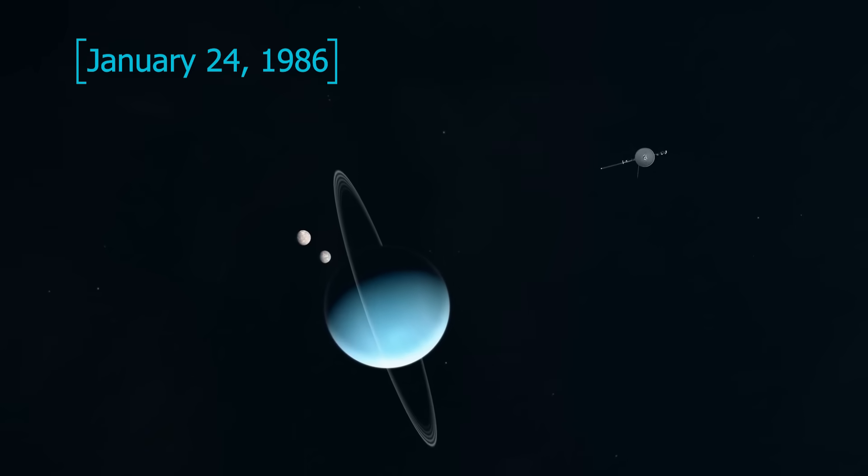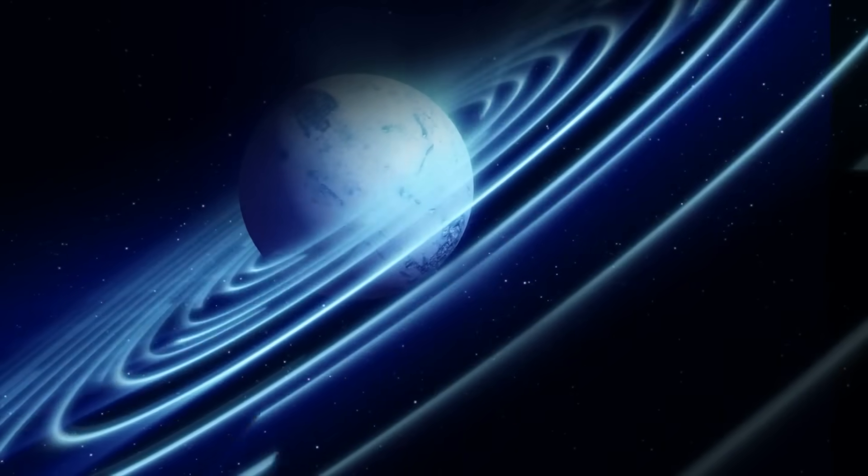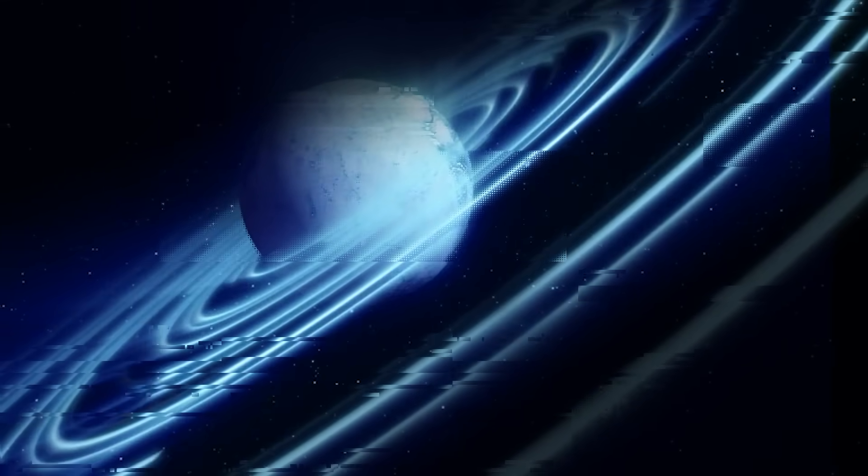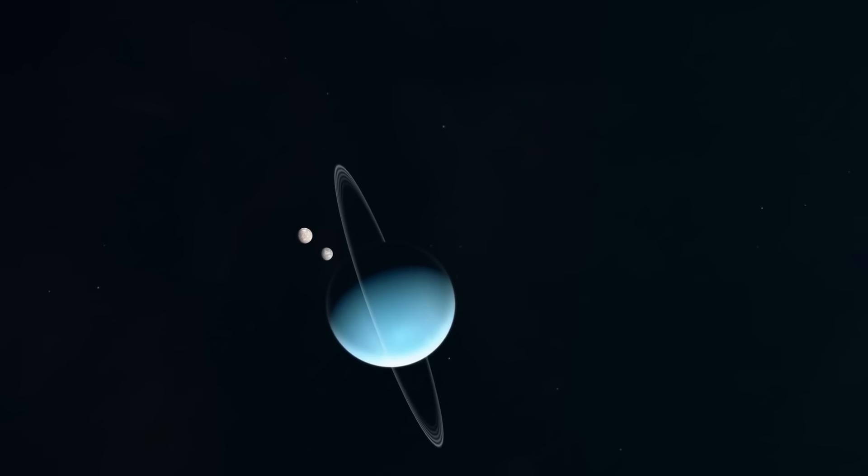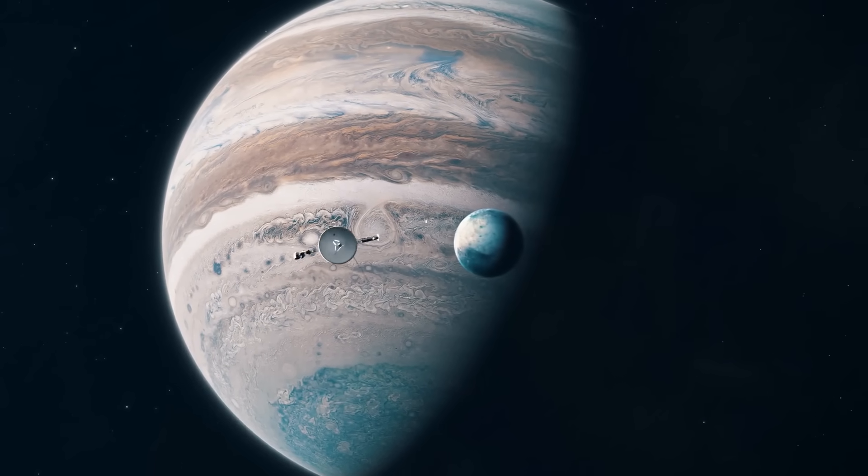On January 24th 1986, Voyager 2 arrived at pale blue Uranus, took its first images and studied its magnetic field, delicate rings and moons. Already, Voyager 1 was en route to the solar system's outermost point.